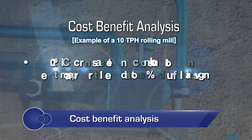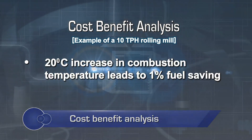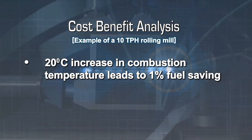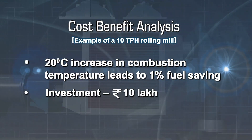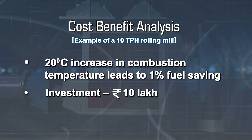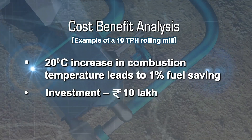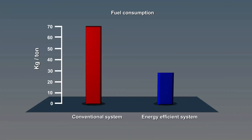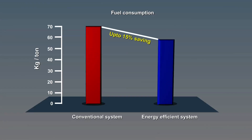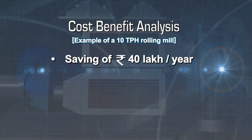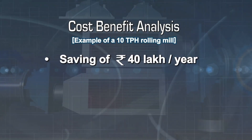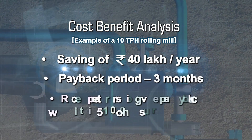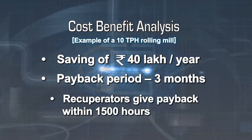Every twenty degrees Celsius increase in combustion air preheat temperature leads to a fuel saving of one percent. Investment in a recuperator varies with its effectiveness. A high efficiency recuperator for a ten TPH furnace would cost around ten lakhs, leading to a saving in specific fuel consumption of fifteen percent annually. A ten TPH plant will save around forty lakh rupees, so the investment can be recovered in less than three months.